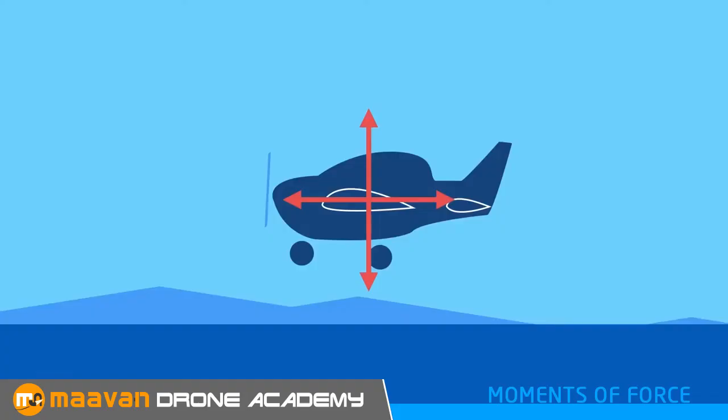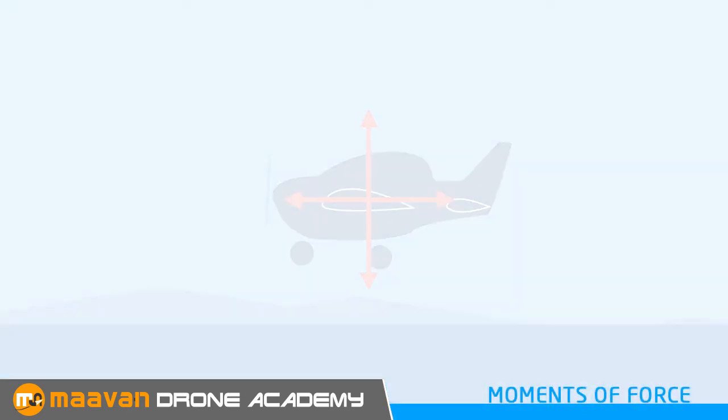An aircraft is a well-balanced machine. In straight and level flight, all forces are in equilibrium. To understand this concept, let's have a look at the moments of force.